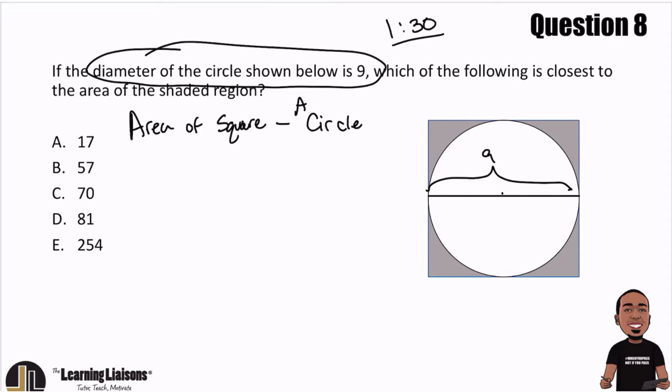And so that means that this up top is 9. And remember, the diameter is across, so also from top to bottom is also 9.